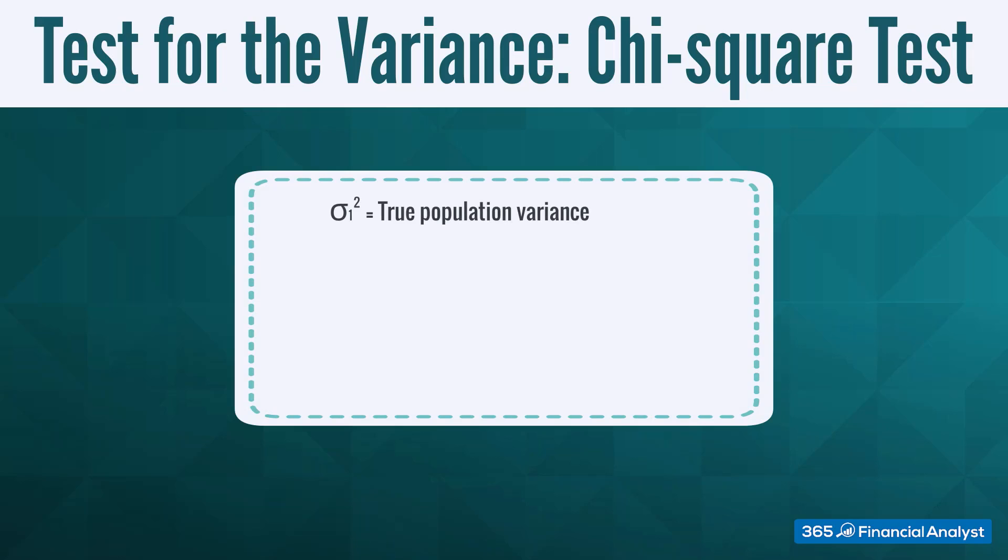If sigma-squared 1 is the true population variance, and sigma-squared 2 is the hypothesized population variance, our null hypothesis would be that the two sigmas are equal. That's when we have a two-tailed test.